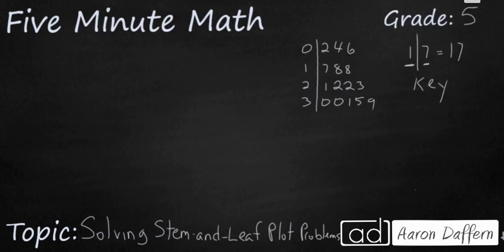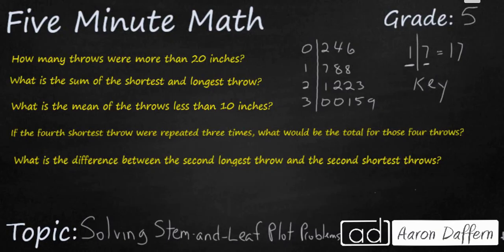Let's look at a few problems. Our first question asks how many throws were more than 20 inches? Well the 20 inches is going to start right here in this two stem, so we've got 1, 2, 3, 4 throws that were 20 to 29 inches, and we have 5, 6, 7, 8, 9, we have to add five more throws that were 30 or more inches. So we have a total of nine throws that were 20 or more inches. Four in the 20s, five in the 30s.